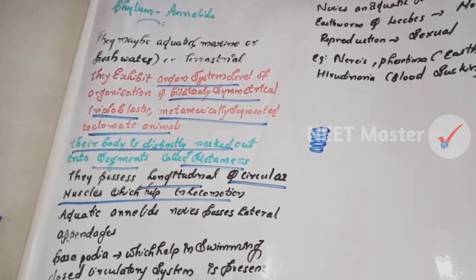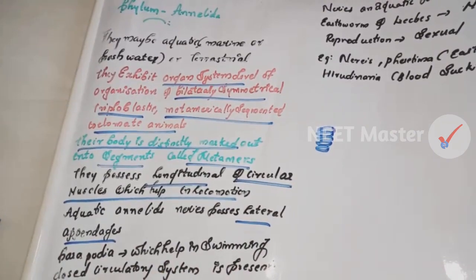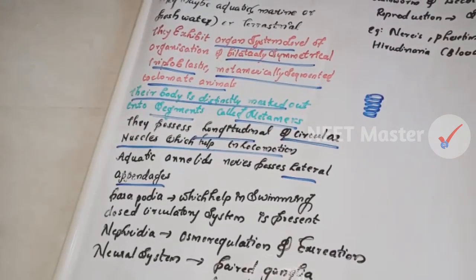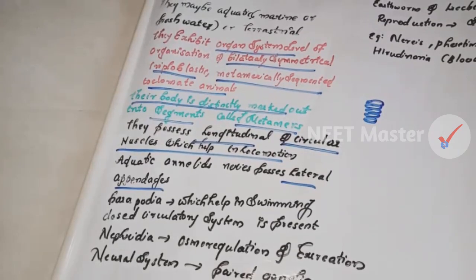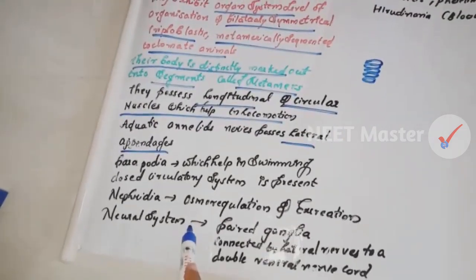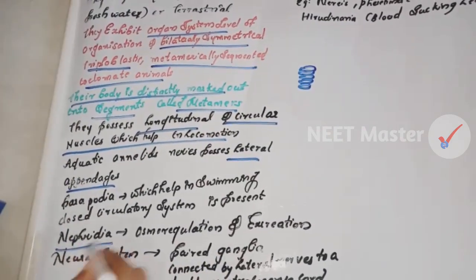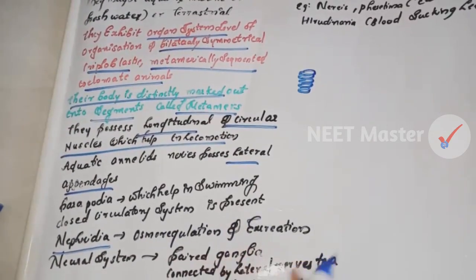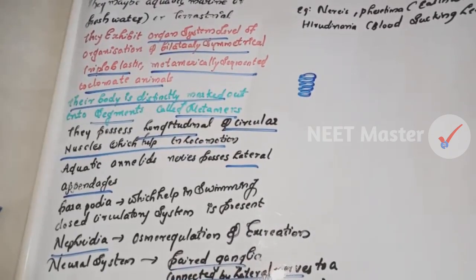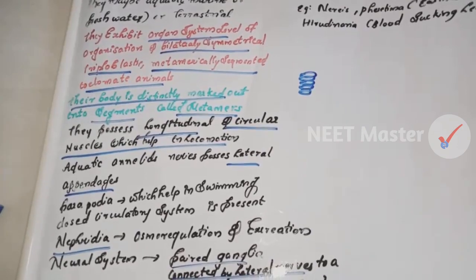Aquatic annelids have lateral appendages called parapodia. They have a closed circulatory system. Nephridia help in osmoregulation and excretion. The neural system is well developed.